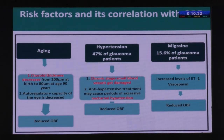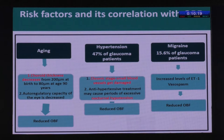With aging, two things happen. The choroidal thickness keeps decreasing — from around 200 microns at birth to 80 microns at 90 years of age — and the autoregulatory capacity of the eye decreases. These two factors together lead to a reduced ocular blood flow.